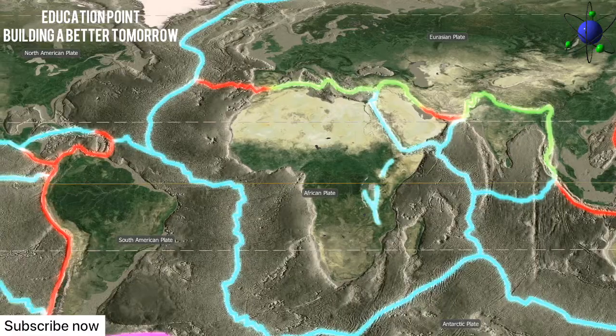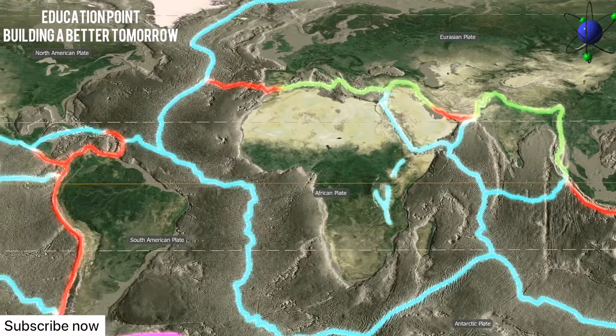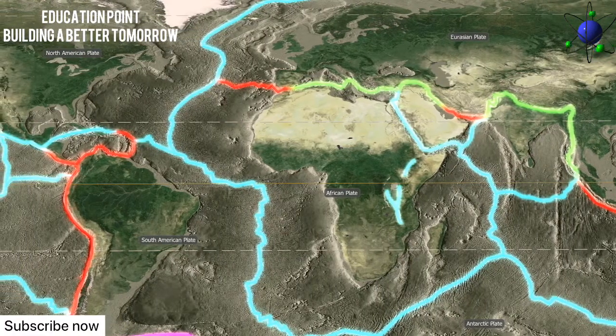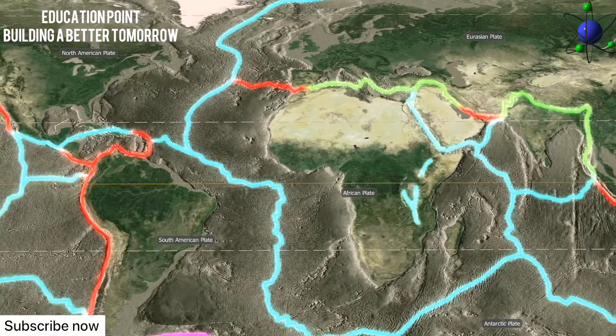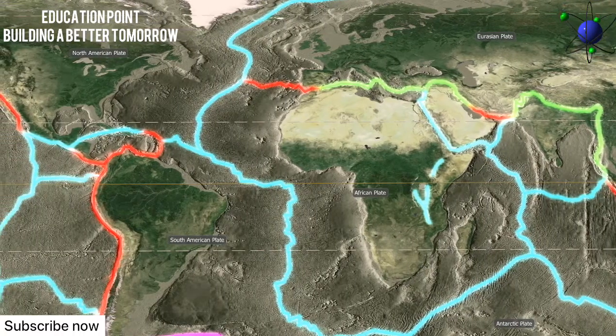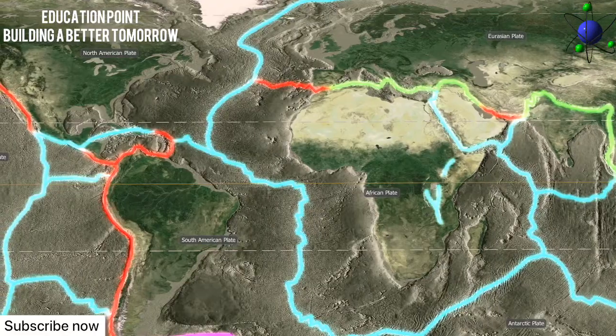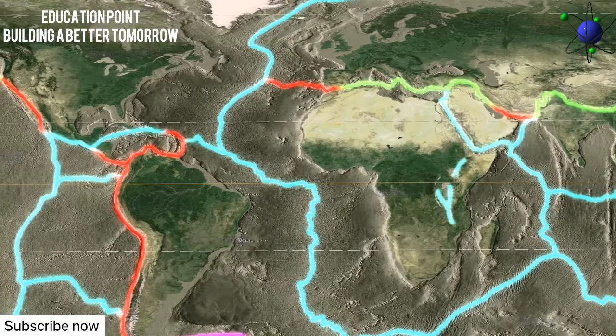The seven major tectonic plates are the African plate, the Eurasian plate, the North American plate, the South American plate, the Pacific plate, the Indo-Australian plate, and the Antarctic plate.